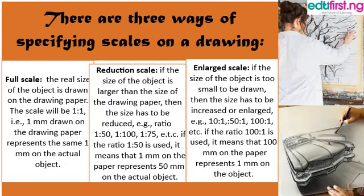There are three ways of specifying scales on a drawing: the first is full scale, the second is reduction scale, and the third is enlarged scale. The full scale is about giving the real measurement of an object on the drawing paper, and the scale is 1:1 — that is, one millimeter on the paper represents one millimeter on the actual object.